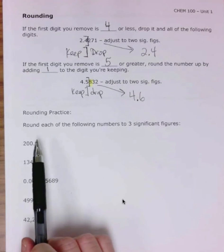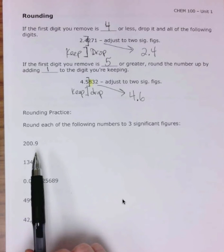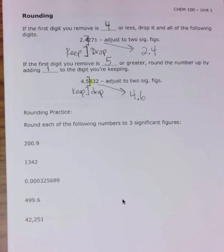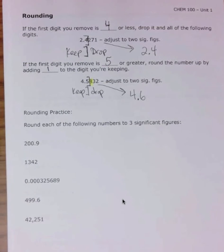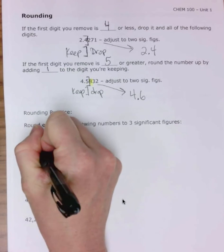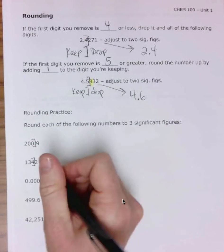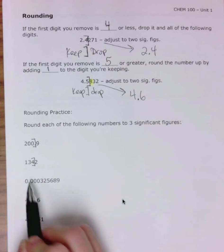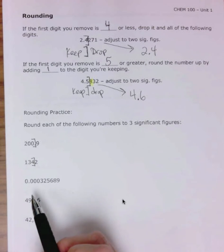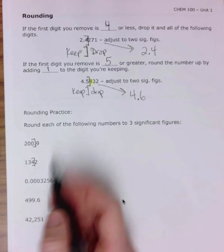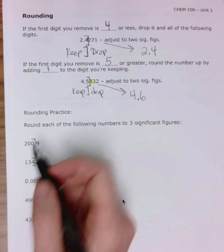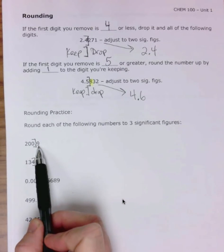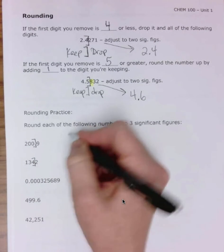I want you to practice rounding. Round each of the following numbers to three significant figures. I recommend putting brackets. For 200.9, the first digit you're dropping is 9, which is 5 or greater, so you add 1 to the digit you're keeping — the answer is 201. For 1,342, the digit being dropped is 2, which is 4 or less, so you don't round up. You can't just say 134 — that changes the magnitude. You need a placeholder zero, so the answer is 1,340, or equivalently 1.34 × 10³.